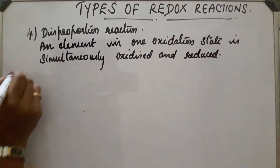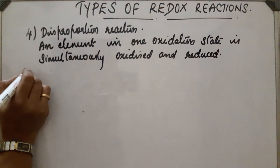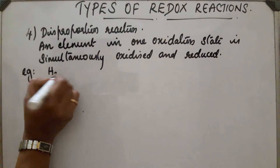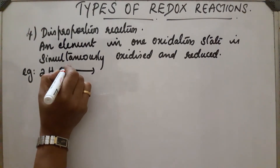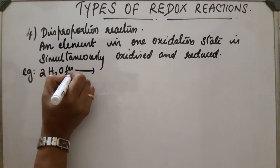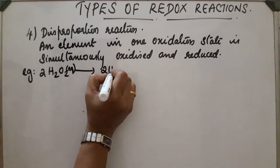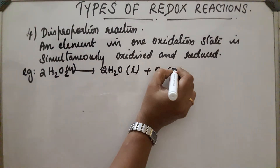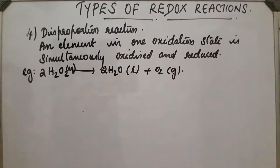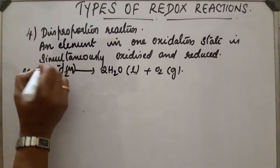Let's take an example: in the case of hydrogen peroxide H₂O₂, the reaction is 2H₂O₂ → 2H₂O + O₂. In this reaction, hydrogen peroxide contains the peroxide linkage, so oxygen has a minus 1 oxidation state.